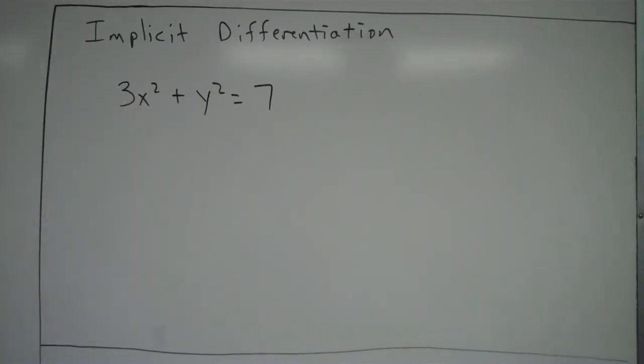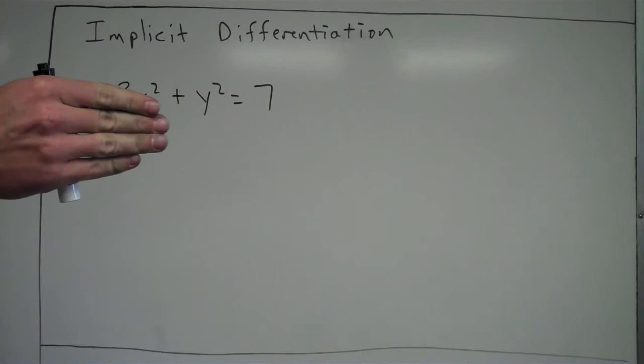All right, we're going to go ahead and take a look at implicit differentiation. So before implicit differentiation, we dealt with stuff that was always defined explicitly, which means something's set up, y equals something in terms of x.